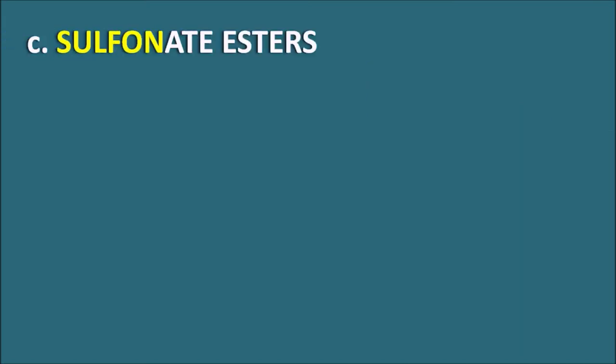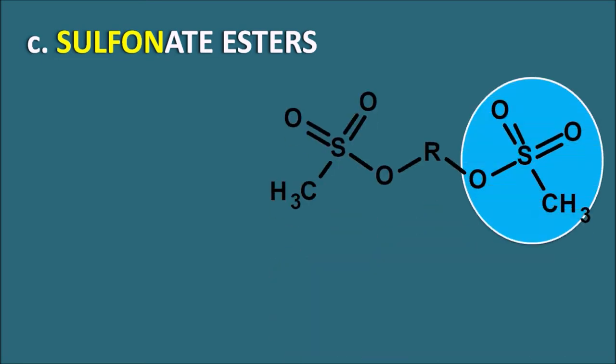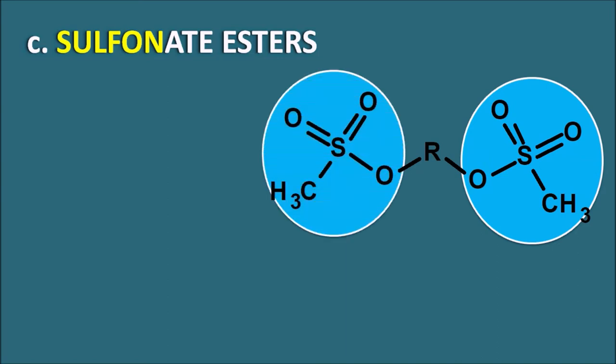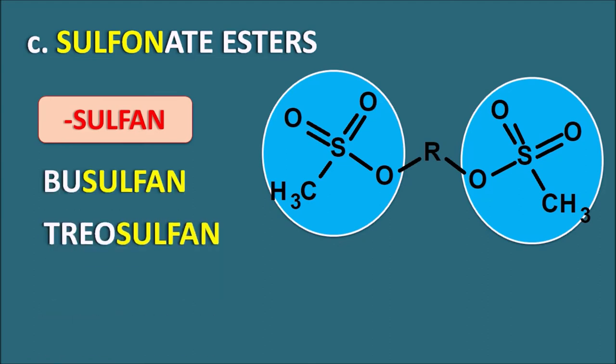The third subgroup is the sulfonate esters. These have methane sulfonate groups on both sides forming an ester. The suffix '-sulfan' (where 'o' is replaced by 'a') indicates they are sulfonate esters. Two drugs in this category are busulfan and treosulfan, both of which are methane sulfonate esters.